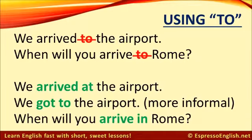Here's another place where you should not use 'to'. Don't say 'we arrived to the airport' or 'when will you arrive to Rome' — it's never correct to have 'to' after 'arrive'. Instead, say: we arrived at the airport, or more informally, we got to the airport. When will you arrive in Rome? 'Get to' is a more informal way to say 'arrive'.